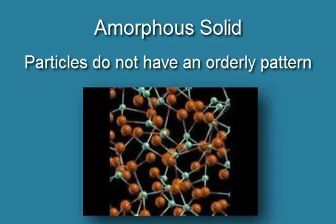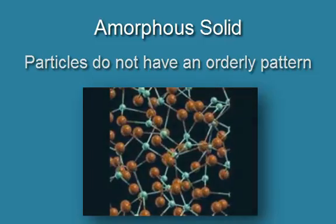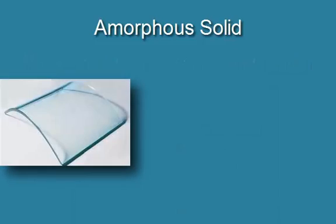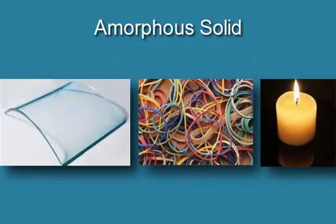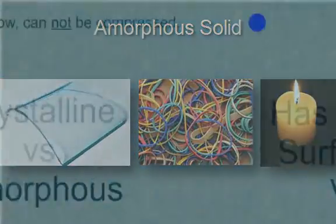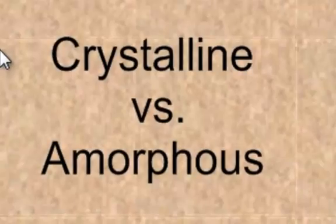Versus amorphous — amorphous means that the particles do not have a special arrangement. Each particle is in one place, but the particles are not arranged in a pattern. Examples of amorphous solids are glass, rubber, and wax. So these two different categories have to deal with how the particles are arranged.